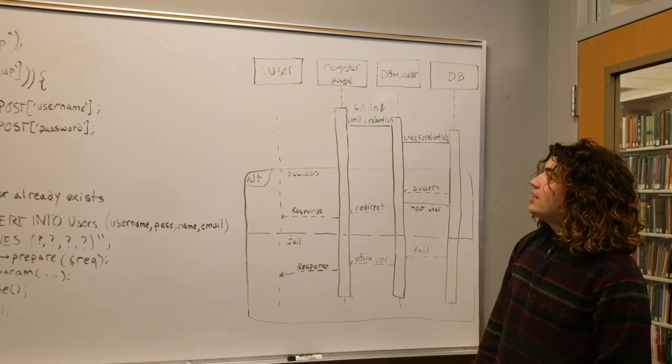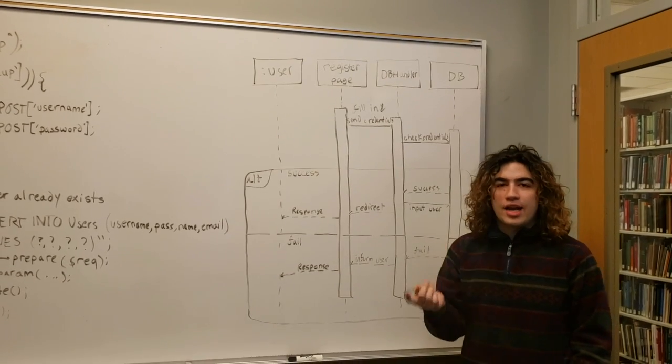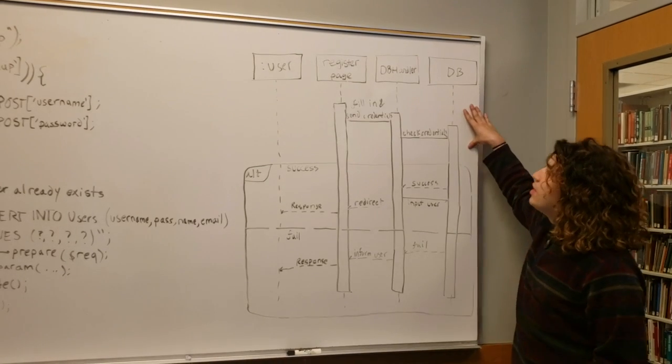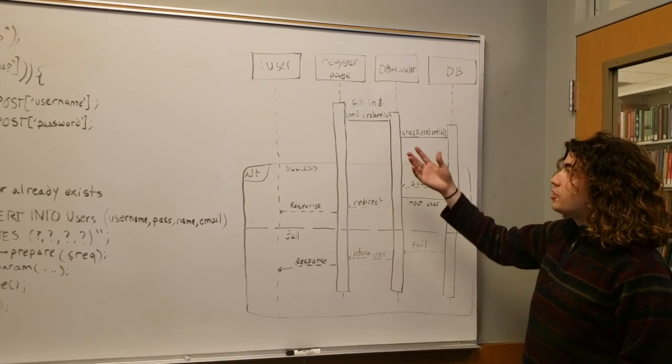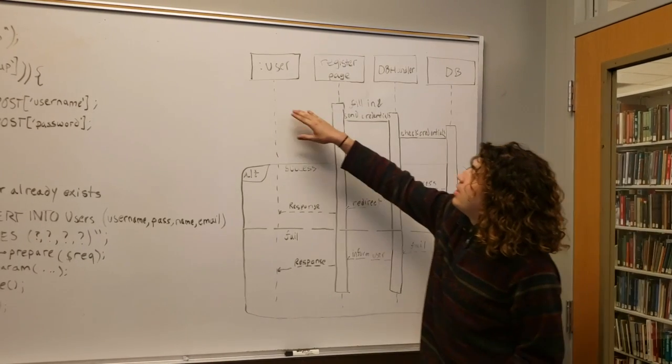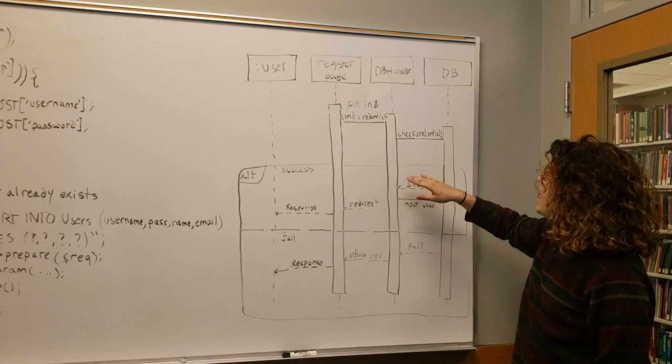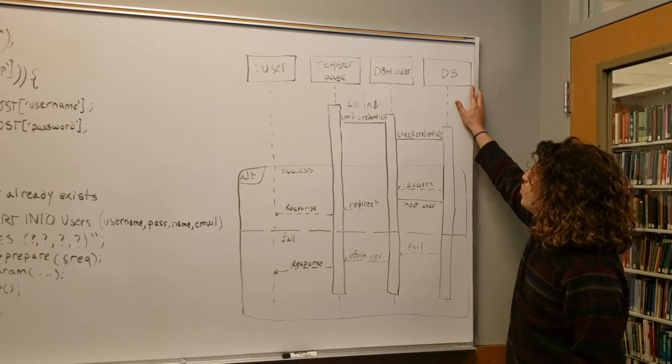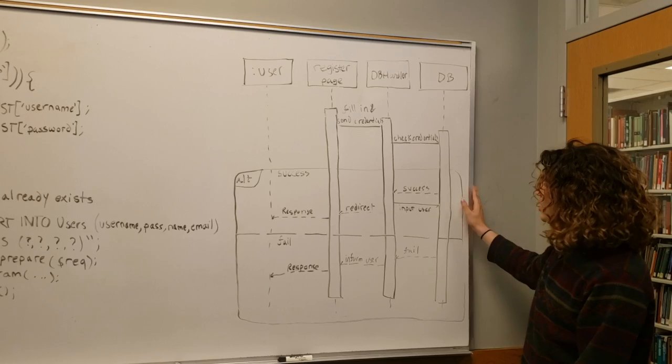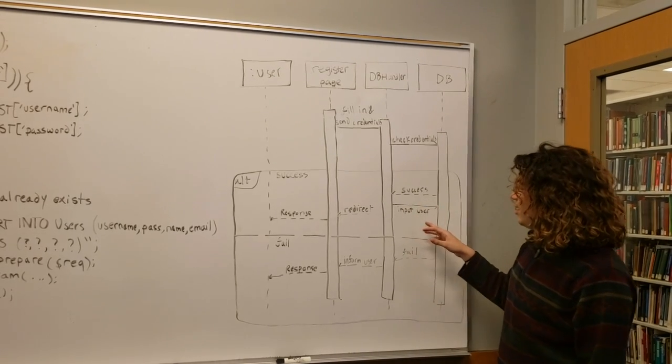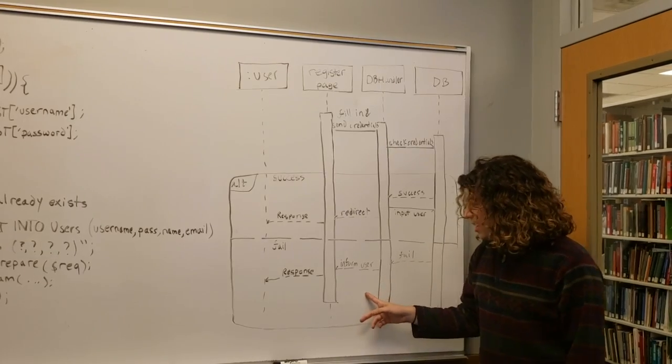So I worked on the implementation again, finishing up our class diagram implementing some things such as the user and signing in, registering, and signing out of a user. Right here I have a sequence diagram of the basic behavior and the lifespan of users registering. A user can come onto the registering page and fill in and send their credentials which is handled by a PHP script. That is used to check the credentials with our database to see if a username already exists. If a username doesn't already exist it will return a success message and redirect the user to the sign-in page. If the username is already taken then it will return a failure and inform the user.